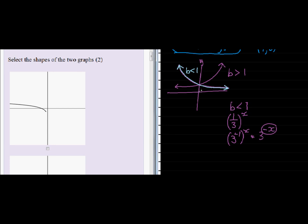Now, if we now reflect this in the line y is equal to x, then we'll get the shape that looks like that. See the reflection? Let's choose another color. So those are the two shapes of the graph.